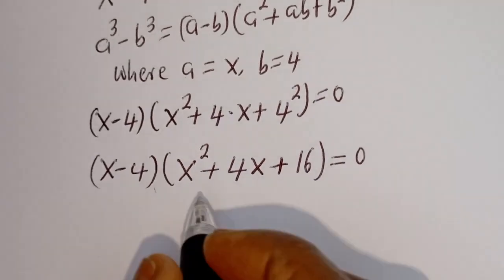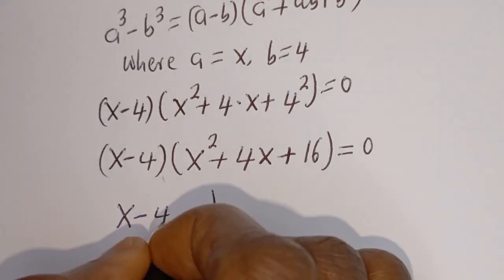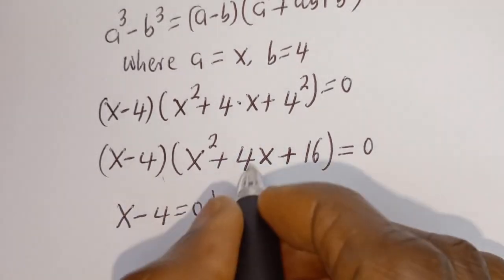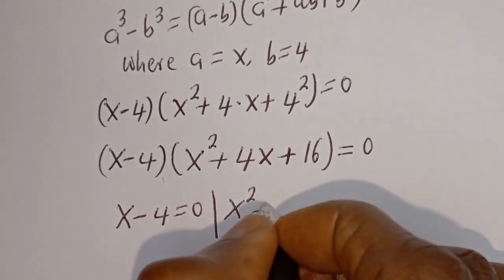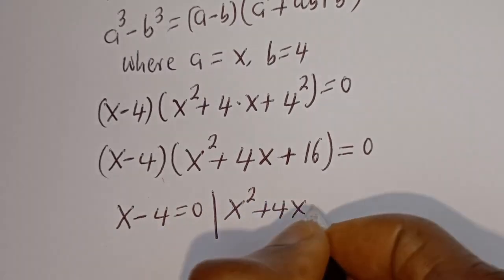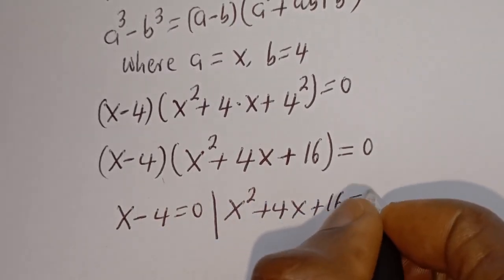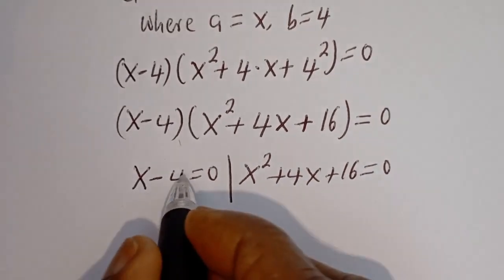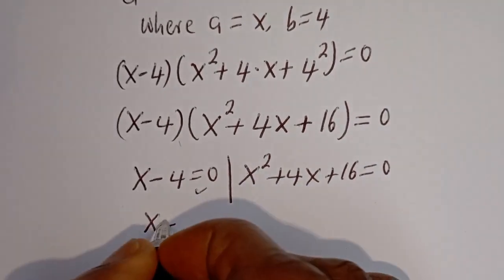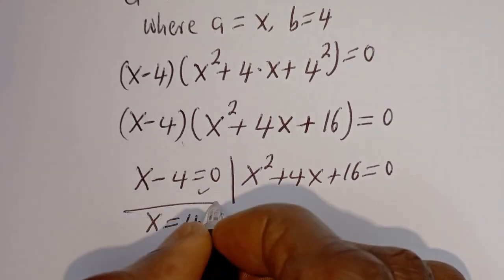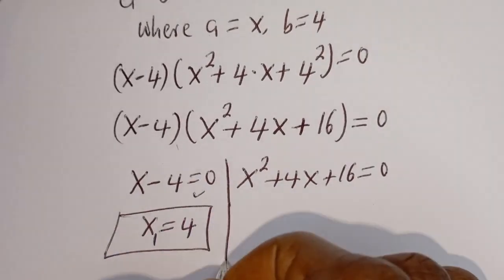Now here there are two cases. The first case is s minus 4 is equal to 0, and the second case is s squared plus 4s plus 16 is equal to 0. From the first case, s is equal to 4. This is the first value of s — let's call this s₁.